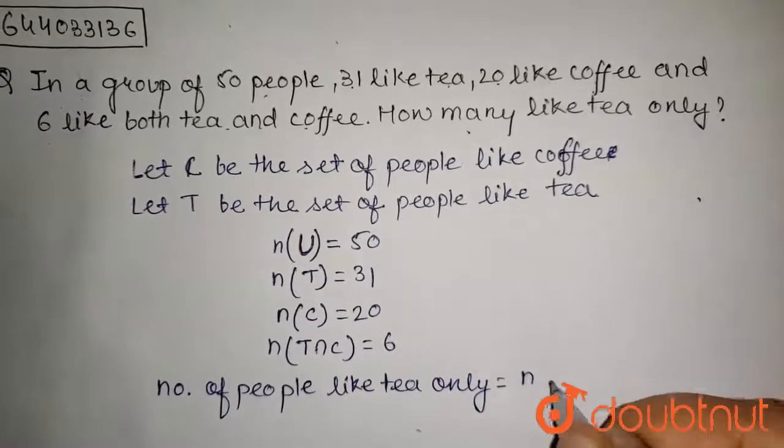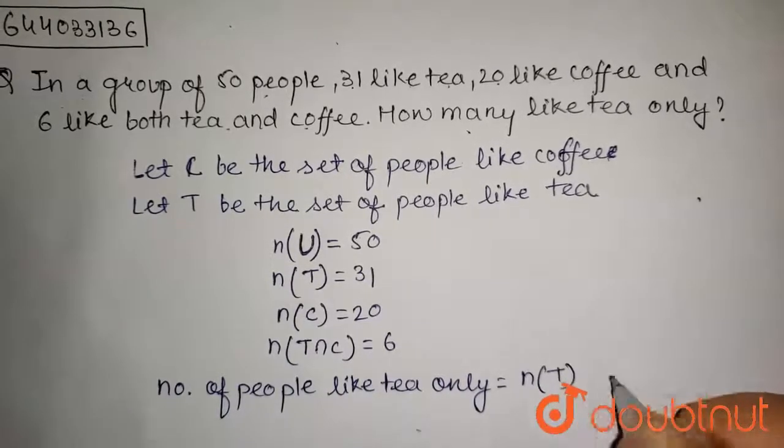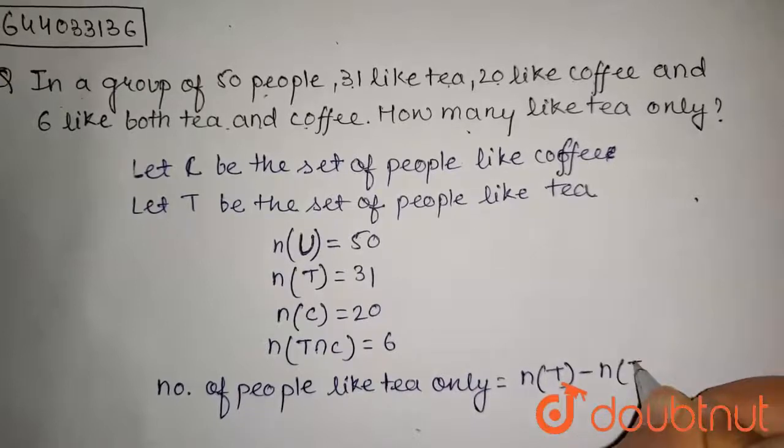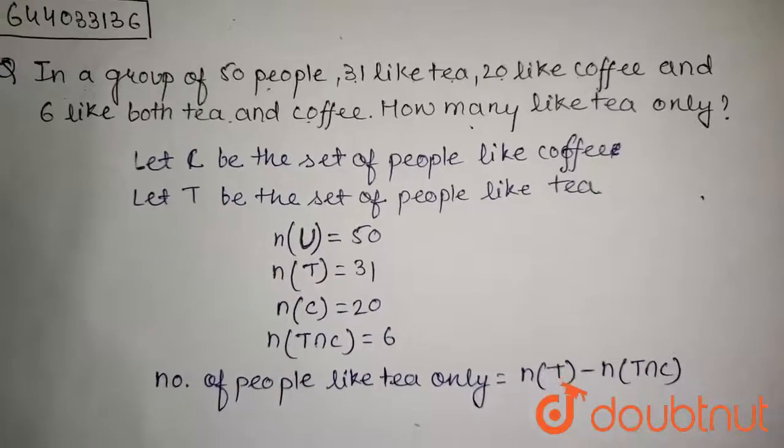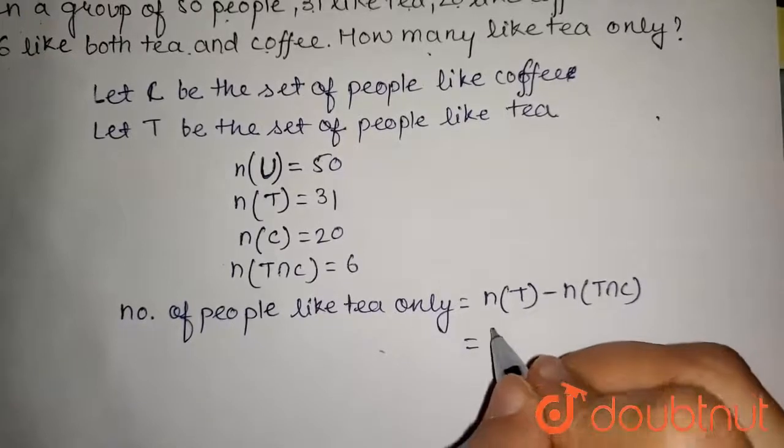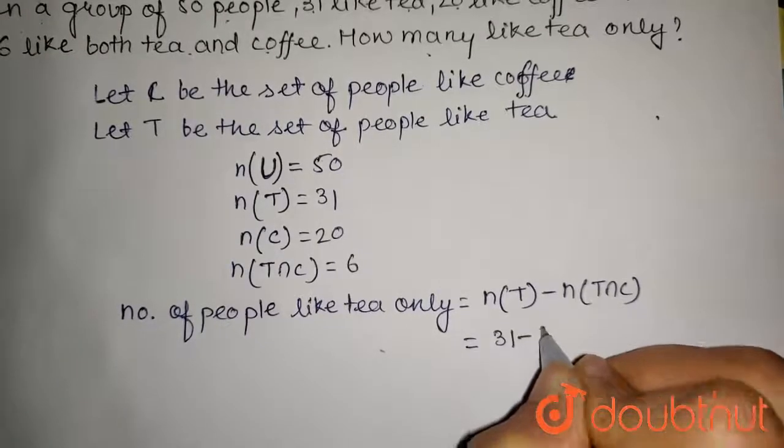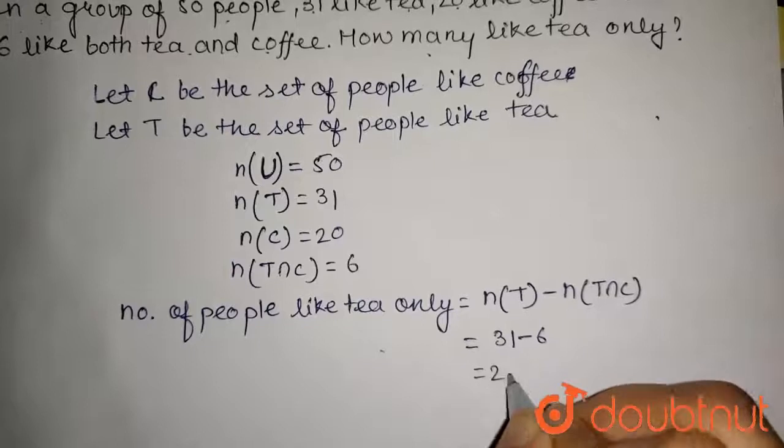So it will be number of elements in T minus number of elements in T intersection C, which is equal to 31 minus 6, which equals 25.